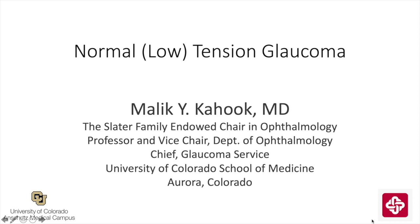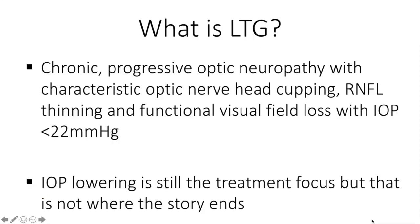This is Malika Hook from the University of Colorado, and the topic today is normal or low-tension glaucoma. LTG is a chronic progressive optic neuropathy with characteristic optic nerve head cupping, RNFL thinning, and functional visual field loss, all of which occurs with an intraocular pressure under 22 millimeters of mercury.